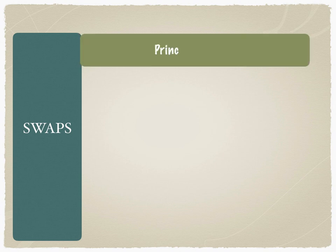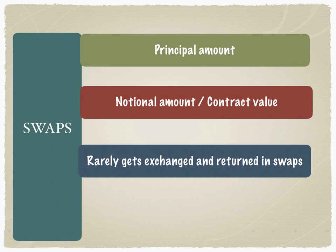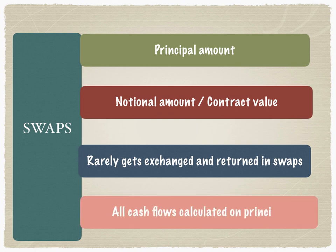The second feature of swaps is that there is a principal amount, also called the notional amount. The notional amount or contract value is never exchanged, or rarely gets exchanged, at the time of entering into the contract, and therefore the notional amount doesn't even have to be returned on maturity. The reason we have a notional amount is because we want to calculate all the cash flows based on it. Both parties to the contract will have the same notional amount, which is the contract value or principal amount, and all cash flows are based on it.